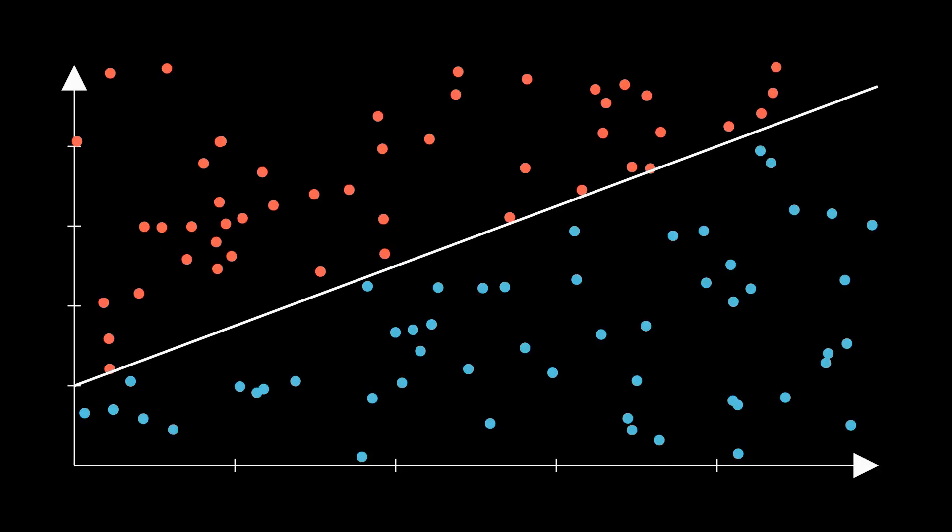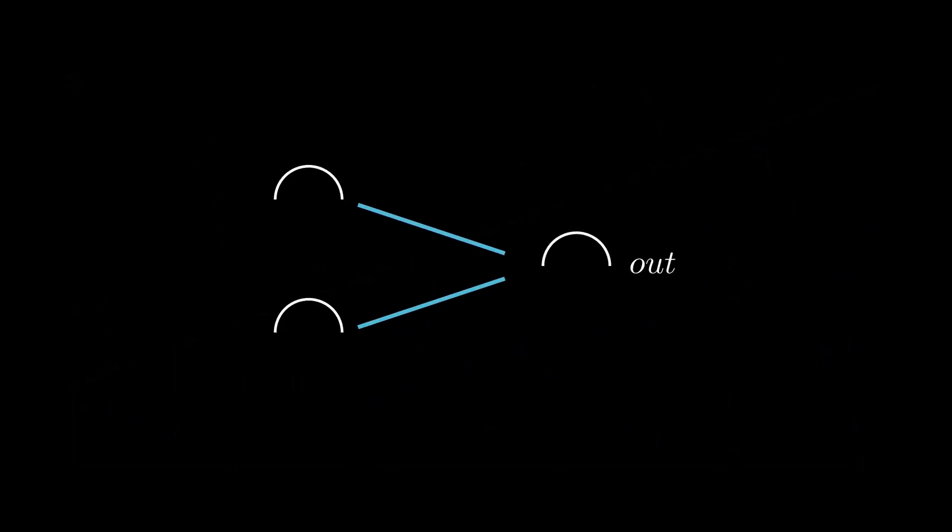Say we take a data plot that looks something like this, where our x and y values are some attribute of some data point. This data can be separated by a straight line. That task can be done by a neural network which takes in two inputs and outputs a value.